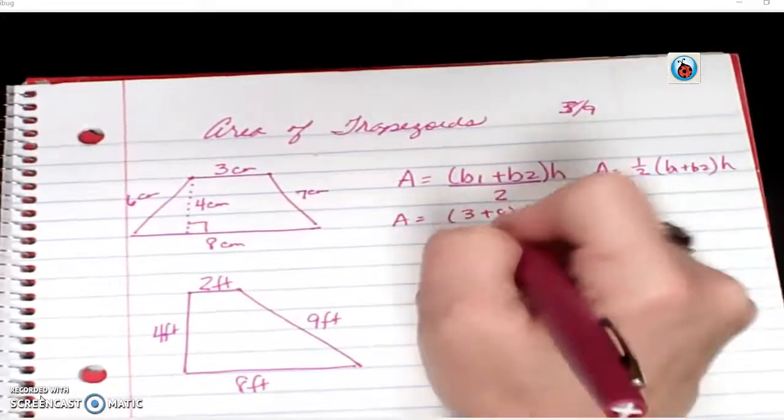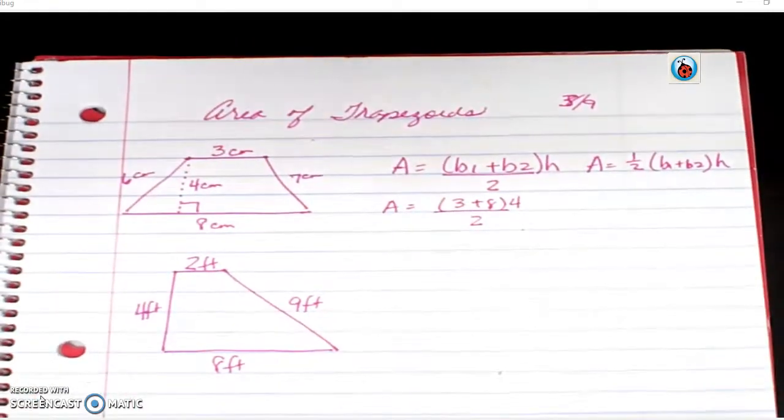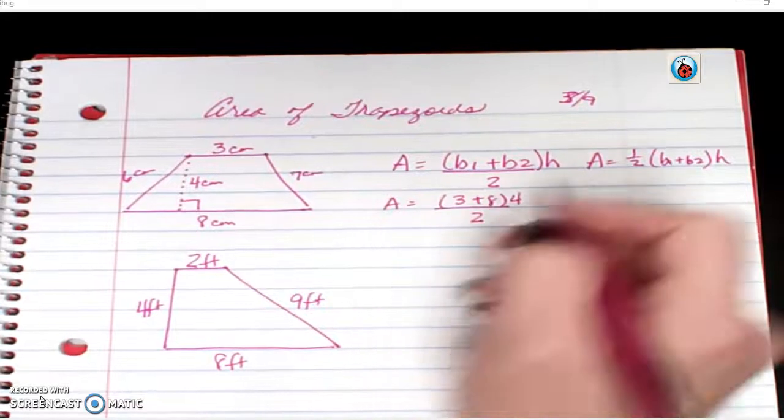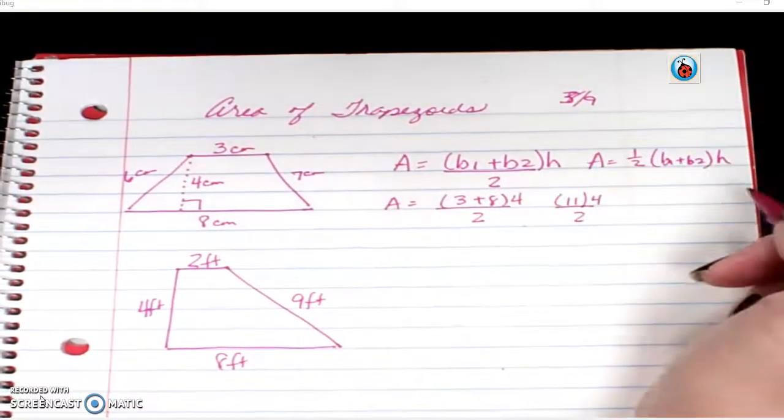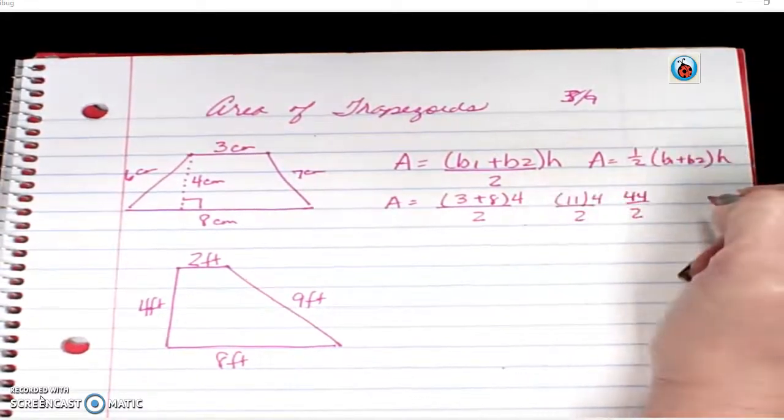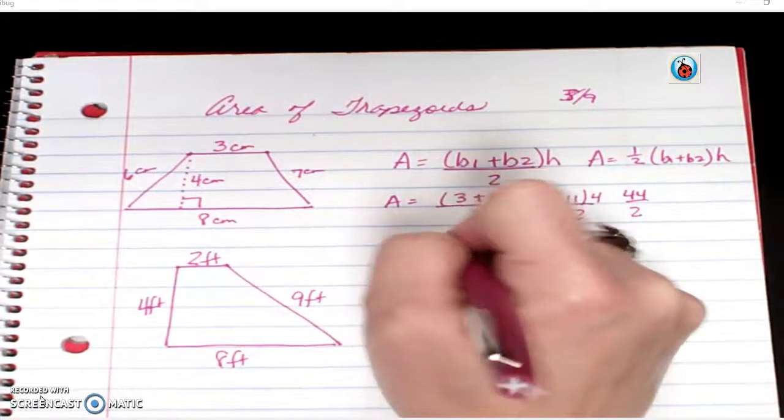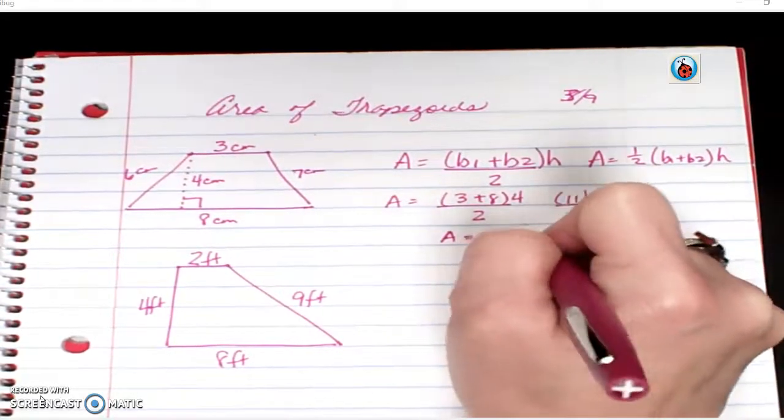So my height is going to be 4. And I'm going to divide by 2. So 3 plus 8 is 11 times 4. So that would be 44 divided by 2. So area equals 22 centimeters squared.